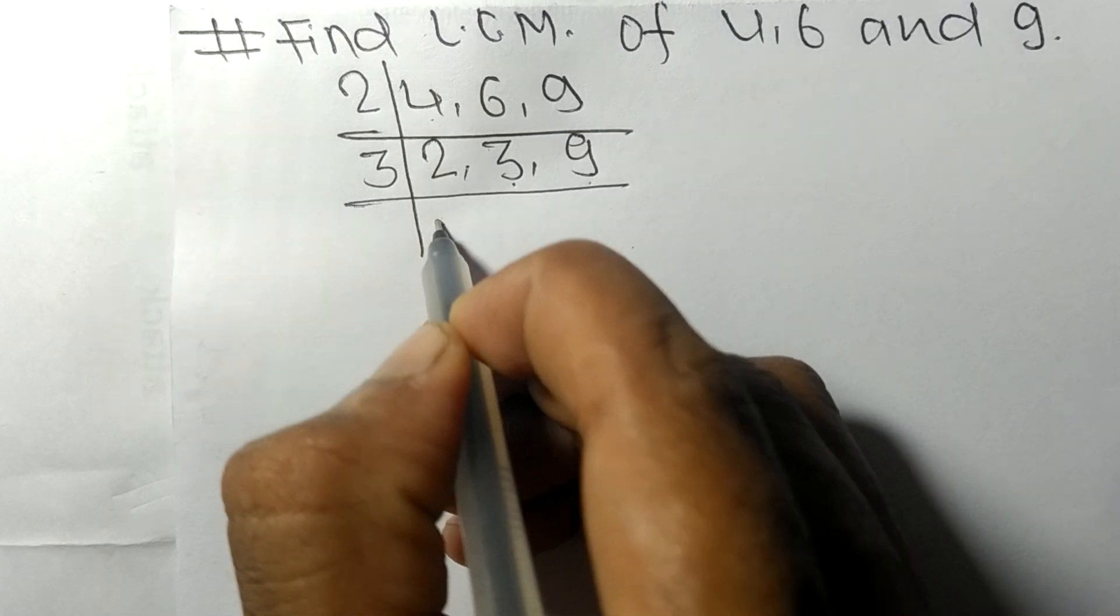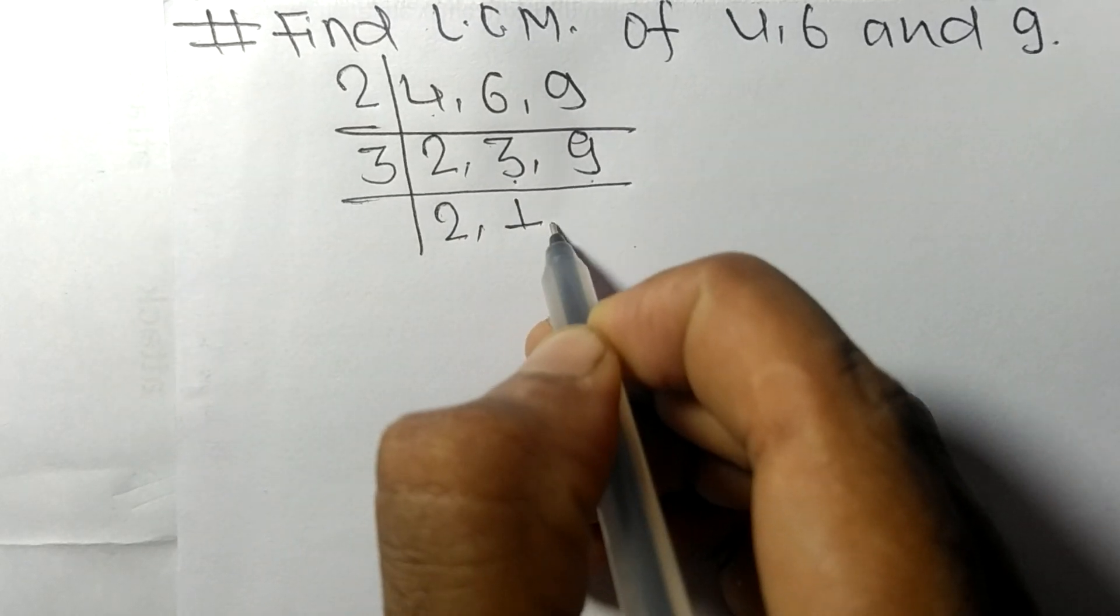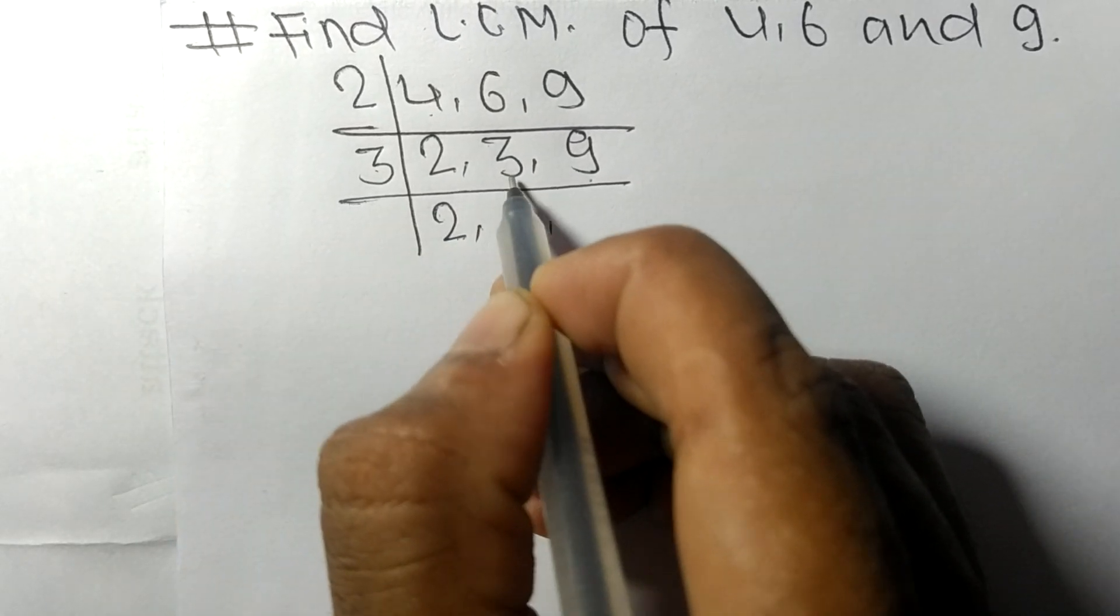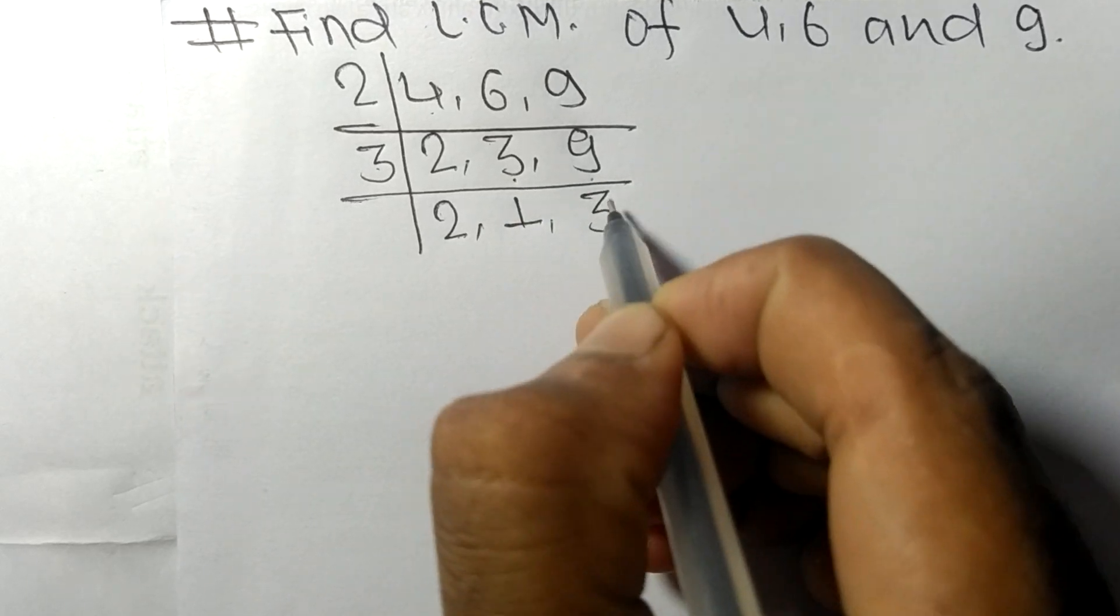2 times 1 means 2, 3 times 1 means 3, 3 times 3 means 9.